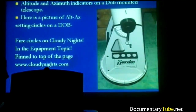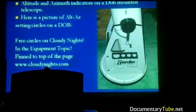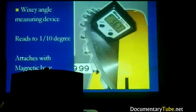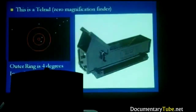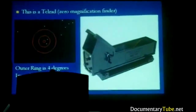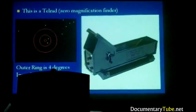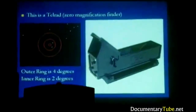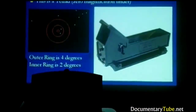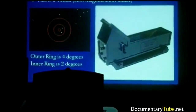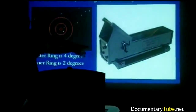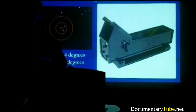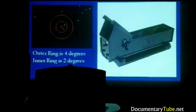Does anybody have any questions about the setting circles, right ascension, declination, altitude, azimuth? Now I'm going to talk about one of the most wonderful inventions that's ever come to amateur astronomers other than a telescope — it's something called a TELRAD finder. Once I got one of these, I never ever wanted to use anything else. There's nothing wrong with other finders — Eric has a finder here on his telescope that is a small refractor with crosshairs in it like a rifle scope.